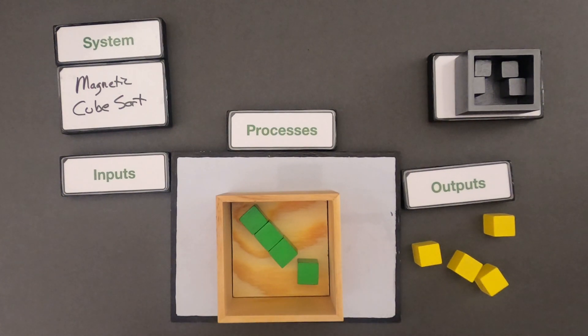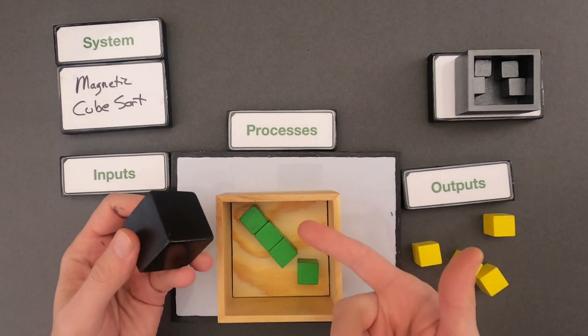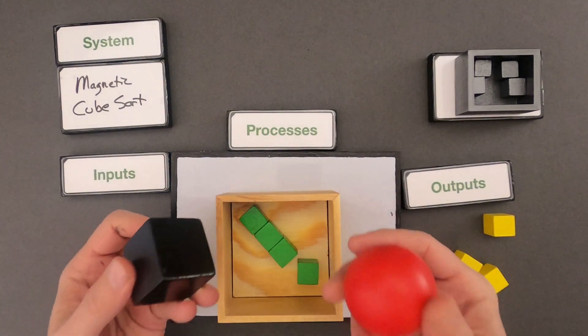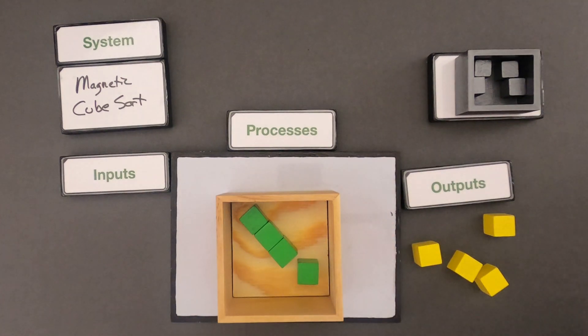So what I want you to do is pause the video and then I want you to draw what you think is the inputs, processes, and outputs. Remember to think about what's the matter going in and also think about the energy that's going in and flowing through the system itself. After you've done pausing it or drawing that, unpause and I'll show you my thinking and we'll see how ours compare.